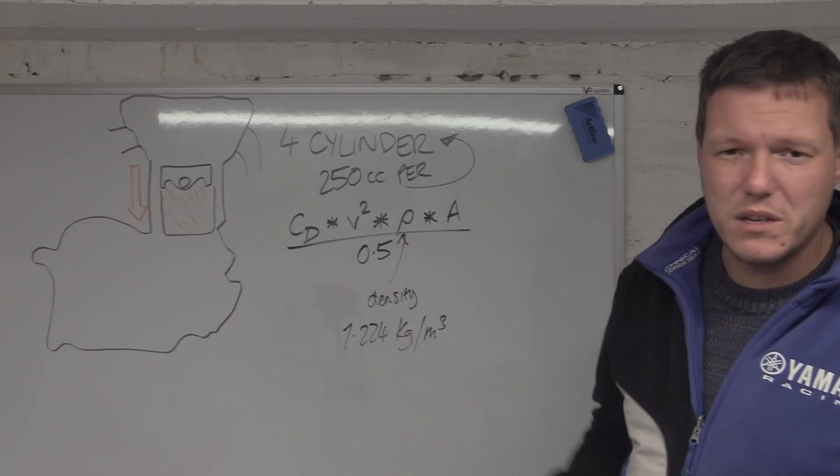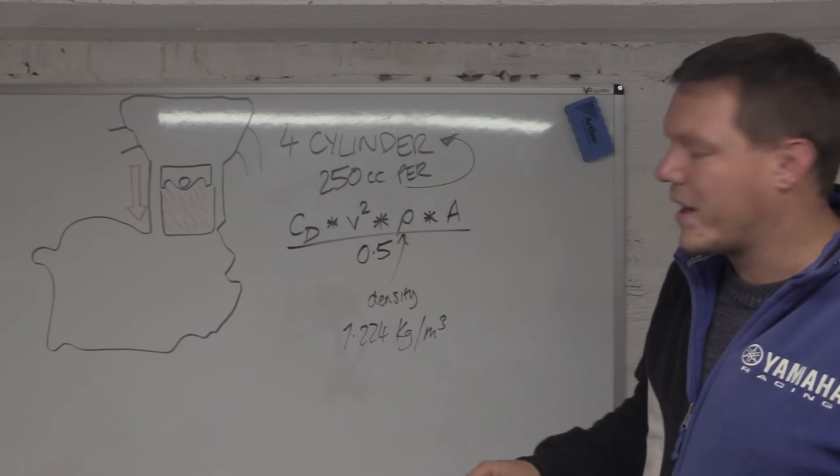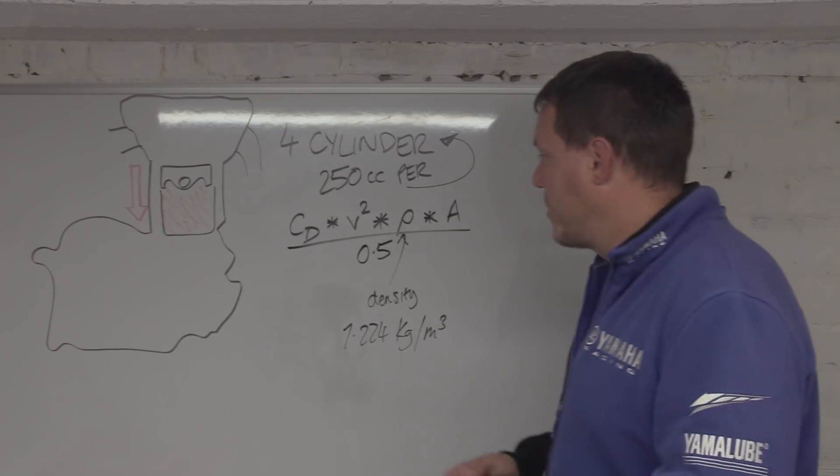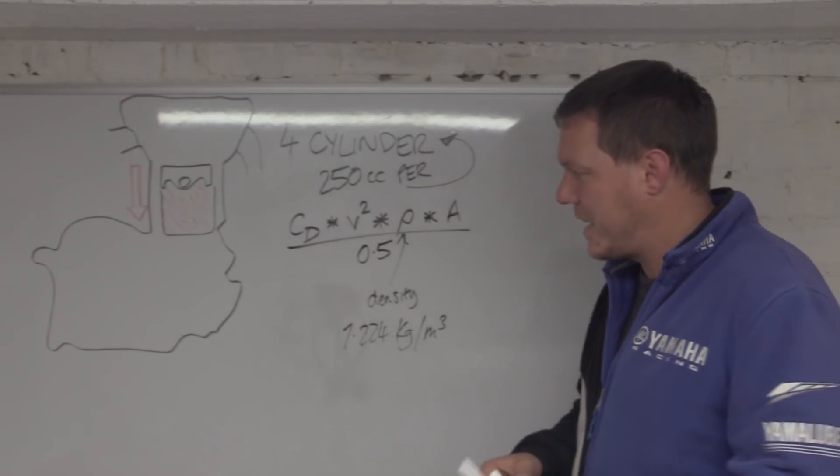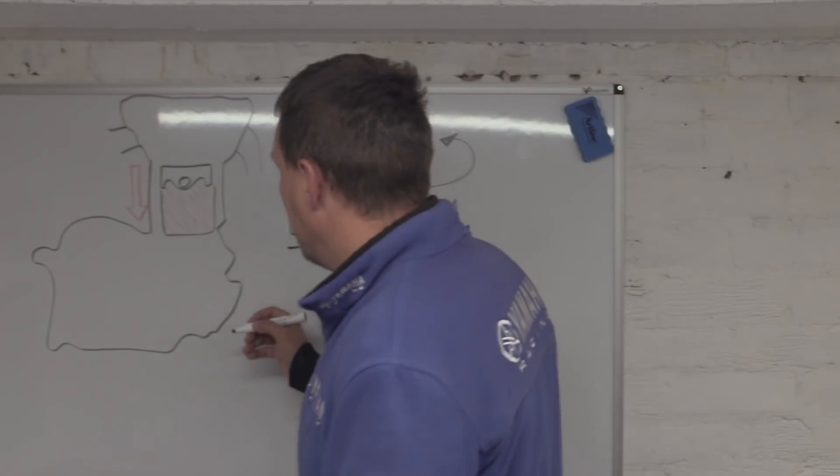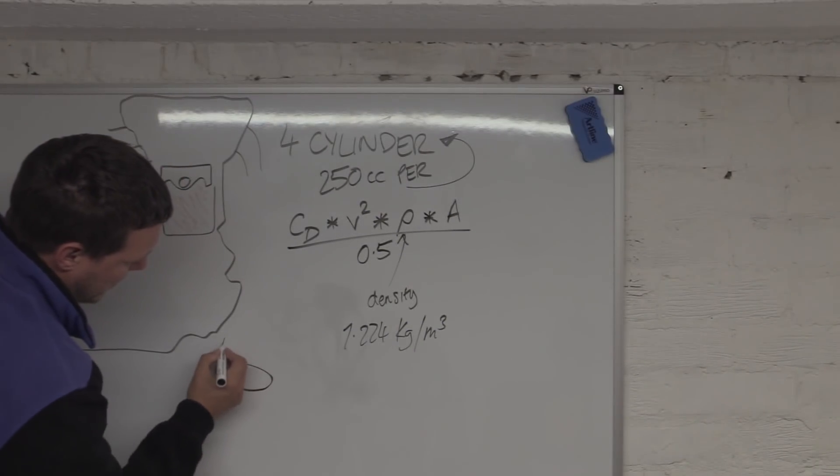Then you times this by the area of your object that you're banging it through, and then you get all this and you half it, so you times this by 0.5. So that's what you do, it's one of these weird equations where you have to get all the units in order.